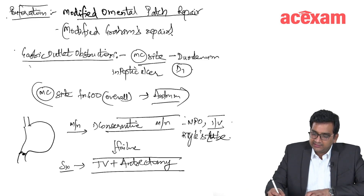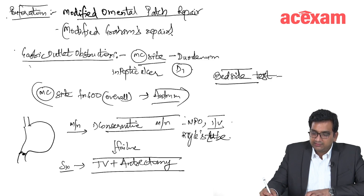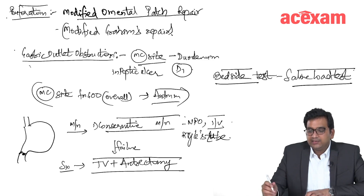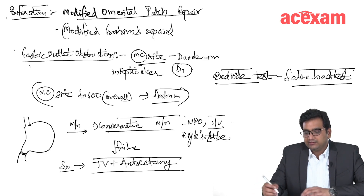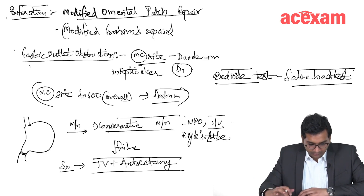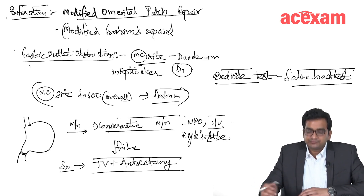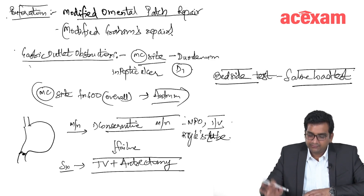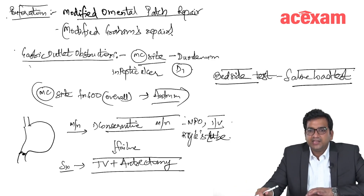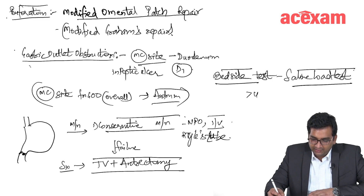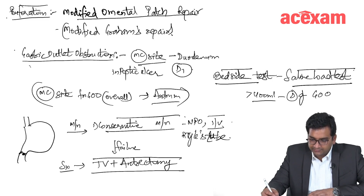The bedside test to detect gastric outlet obstruction is the saline load test. We first empty the stomach using a Ryle's tube, then fill 750 ml of normal saline into the stomach and wait for 30 minutes. If the NG aspiration after 30 minutes is more than 400 ml, it is diagnostic of gastric outlet obstruction.